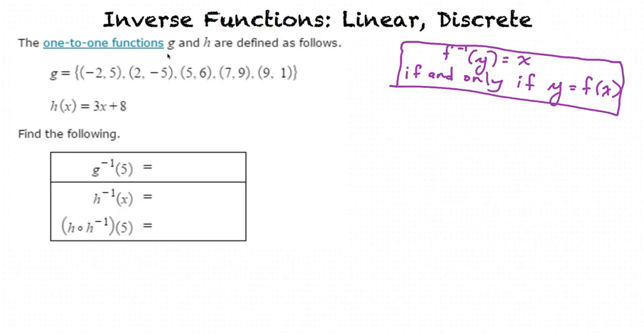The one-to-one functions g and h are defined as follows: g equals the set {(-2,5), (2,-5), (5,6), (7,9), (9,1)} and h(x) = 3x + 8.